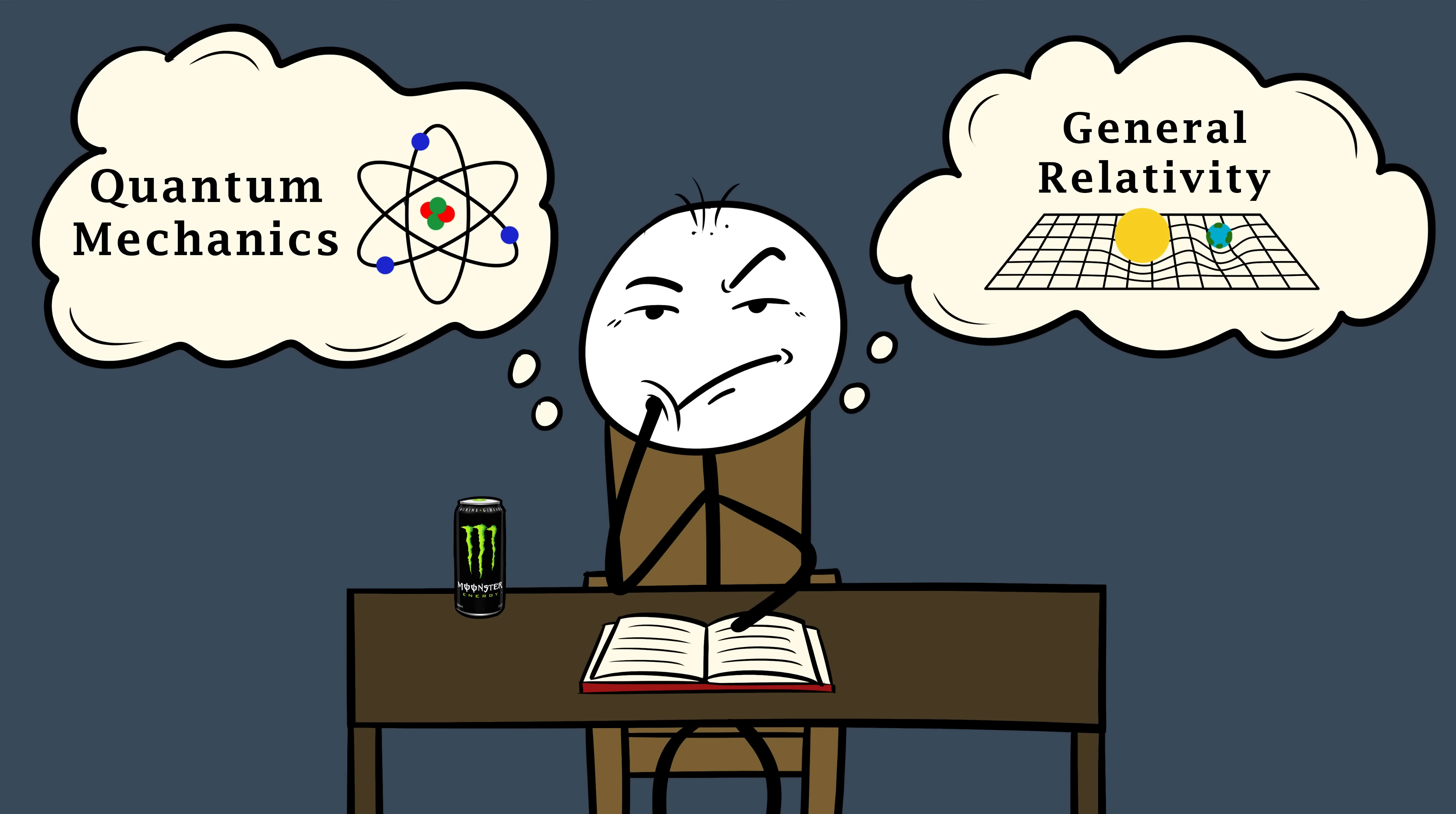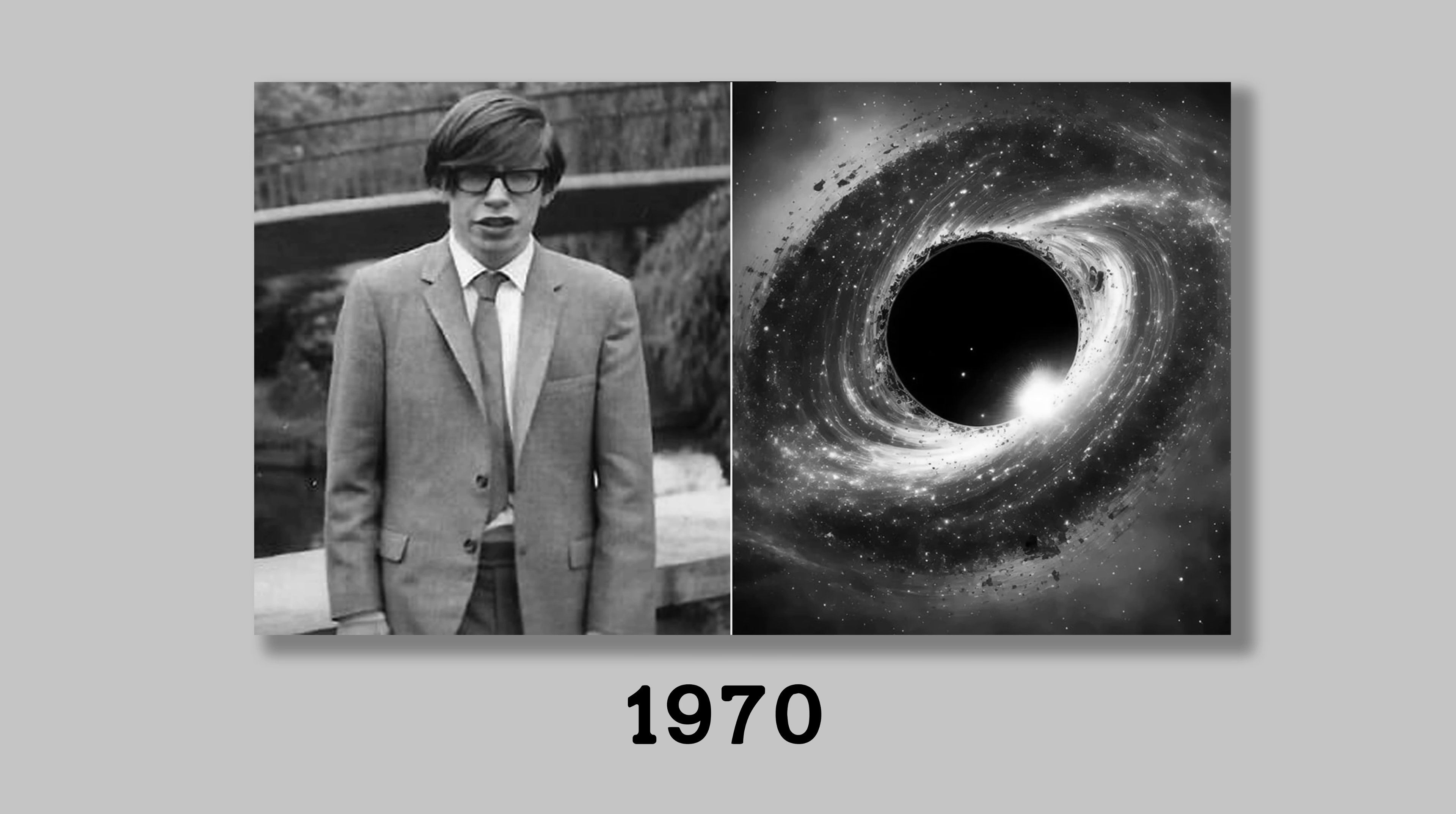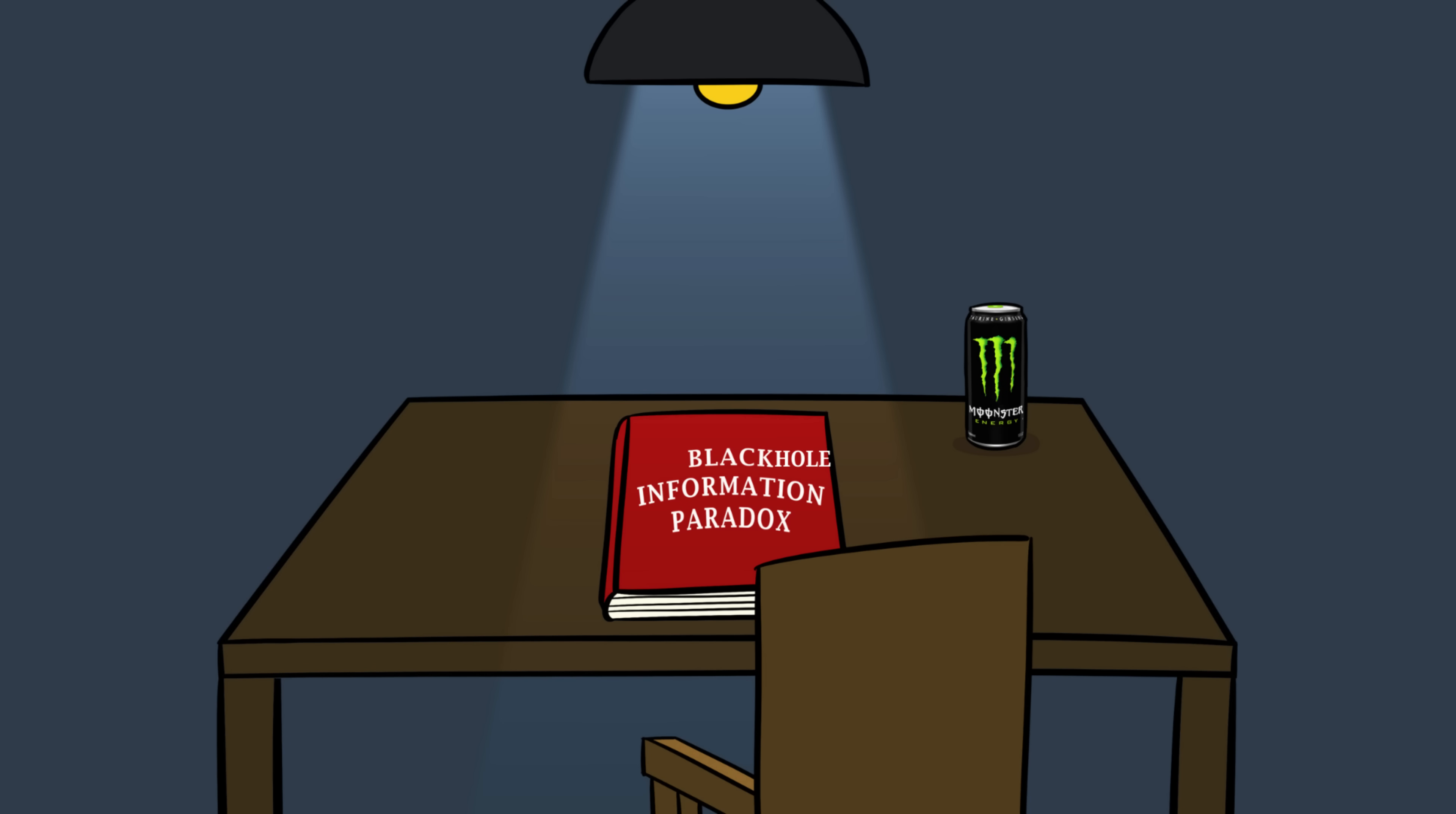Those two ideas can't both be right. In the 1970s, Stephen Hawking discovered that black holes actually leak energy in the form of Hawking radiation and slowly evaporate over time. If they eventually disappear, then all the information about what fell inside would vanish too, violating the basic rules of physics. This is known as the black hole information paradox, and it's still unsolved.